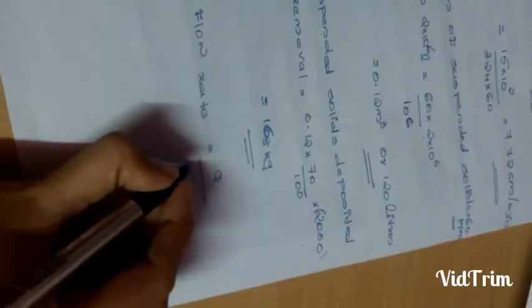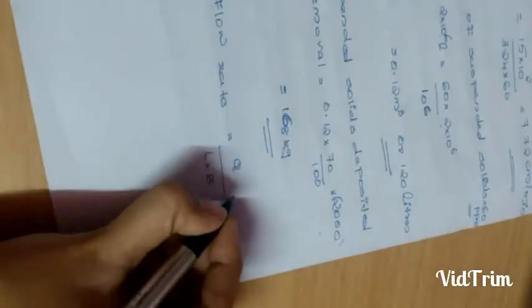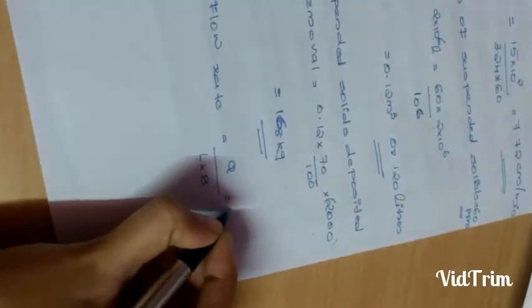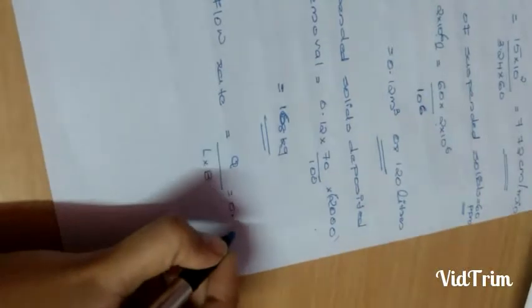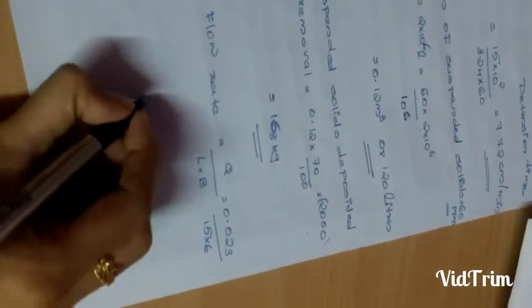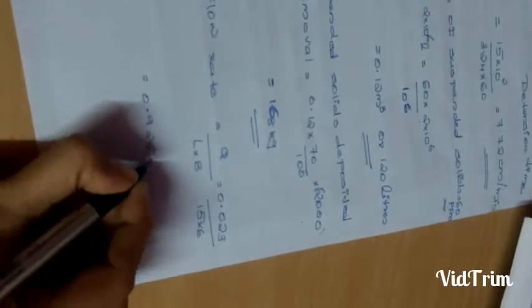The last one: we have to find out the overall flow rate. Overall flow rate is equal to Q divided by length into breadth. Q is 0.023, divided by 50 into 6. We get this as 0.925 meter cube per hour per meter square. This is the overall flow rate we are obtaining.